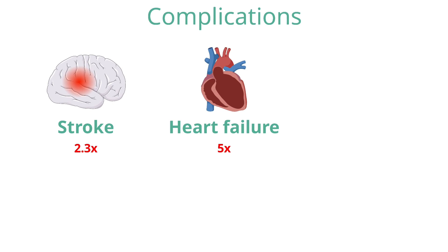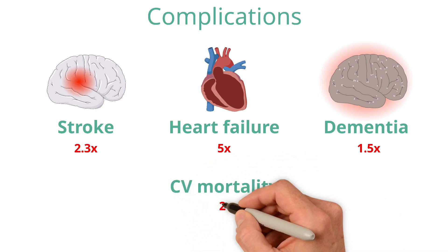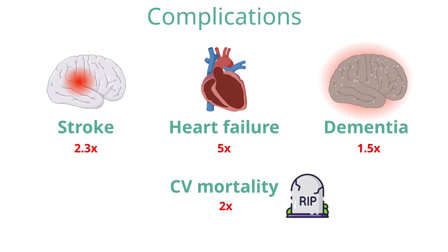Patients with chronic atrial fibrillation are thought to be at an increased risk of cognitive impairment and dementia by around 1.5 times, especially vascular dementia, which might reflect a series of microembolisms or small strokes too small to detect clinically. Finally, patients with AF also have a two-fold increased risk of cardiovascular and all-cause mortality, due to a combination of these complications and shared risk factors with other diseases such as ischemic heart disease.